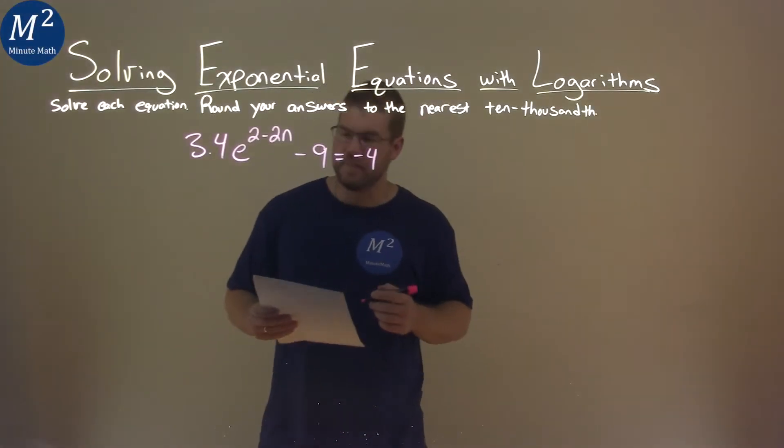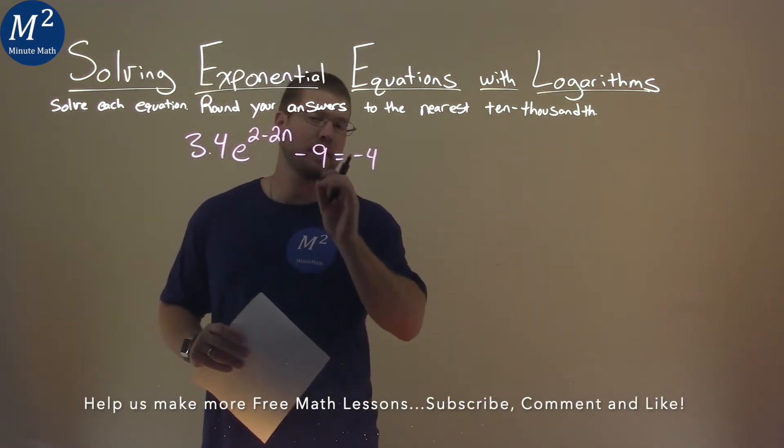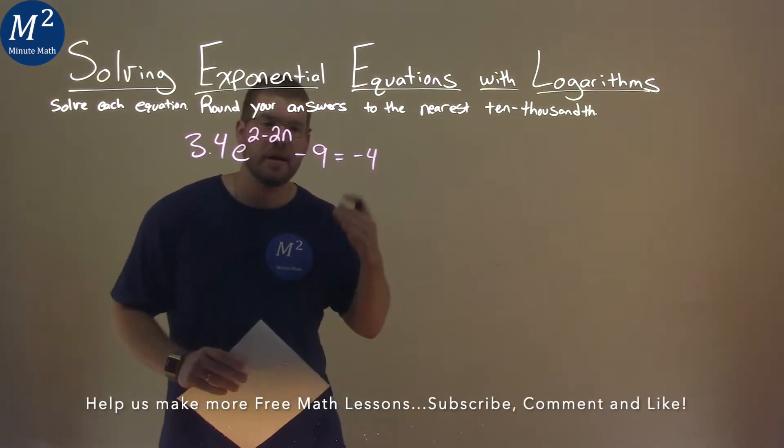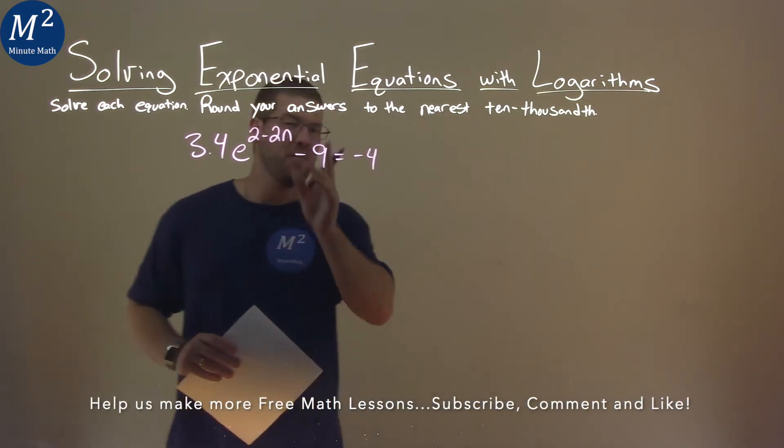We're given this problem right here. 3.4 times e to the 2 minus 2n minus 9 is equal to negative 4. We have to solve this equation by using logarithms.